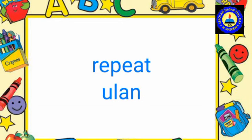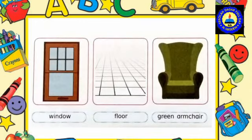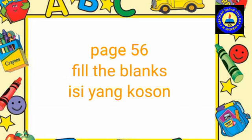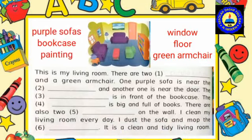Excellent! Now please repeat after me: Purple sofas. Bookcase. Paintings. Window. Floor. Green armchair. Good job! Good job, kids.